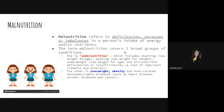Malnutrition covers two broad groups of conditions. Number one is undernutrition, which includes stunting, wasting, underweight, and micronutrient deficiency or insufficiency due to lack of important vitamins and minerals. However, malnutrition can also refer to overweight and obesity, and diet-related non-communicable diseases such as heart disease, stroke, diabetes, and cancer. All of these can be attributed to malnutrition — malnutrition is not just undernutrition but can also be excess or imbalance of nutrition.